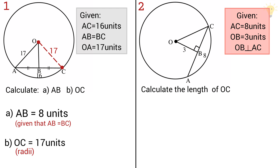In the second example of Theorem 1, we are given that AC is 8 units, OB is 3 units, and OB is perpendicular to AC. We need to calculate the length of OC. Triangle OBC is a right-angle triangle because one angle equals 90 degrees. Even if not indicated, we know that a line from the center meeting the chord at its midpoint makes a 90 degree angle.